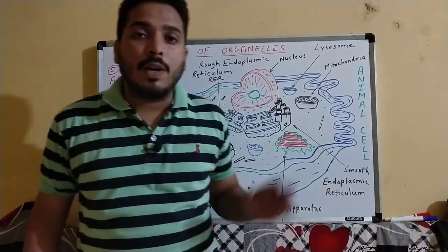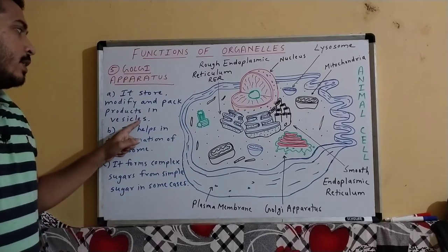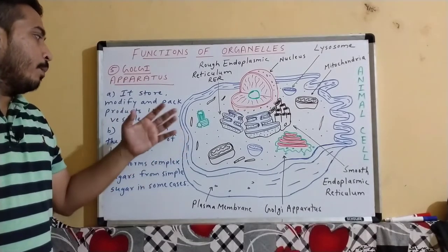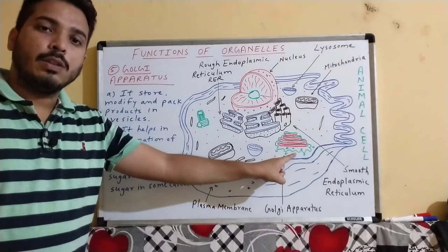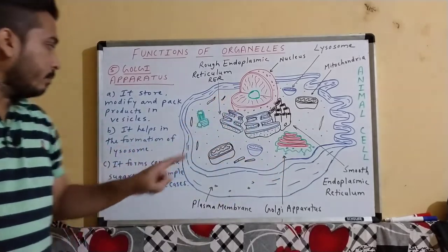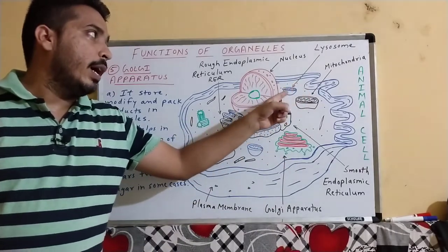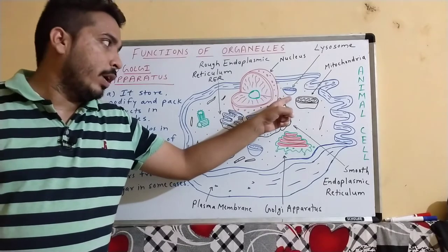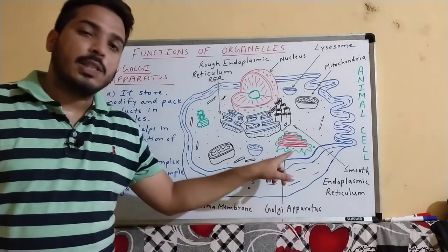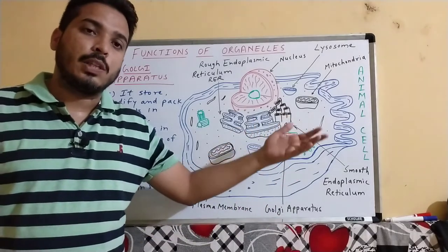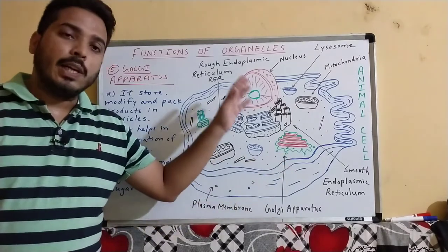Our next cell organelle is Golgi apparatus. Its first function is it stores, modifies, and packs products in vesicles. Here on the board, the Golgi apparatus appears as a tube-like structure nearby the endoplasmic reticulum. It also helps in the formation of lysosomes, which are called the suicidal bag of the cell. Additionally, it forms complex sugar from simple sugar in some cases.